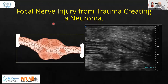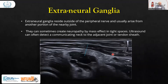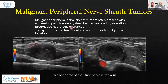We can have focal nerve entrapment where only a part of the nerve is entrapped, followed by swelling distally. We can also have focal nerve injury from trauma creating a neuroma — after injury, a mass formation occurs. Extra-neural ganglia reside outside the peripheral nerve and usually arise from a nearby joint. Malignant peripheral nerve sheath tumors can occur; the most common is the schwannoma, which in this case is arising from the ulnar nerve.